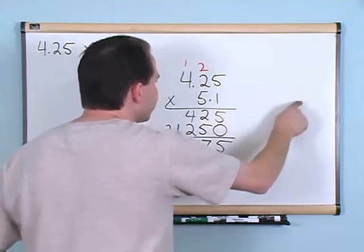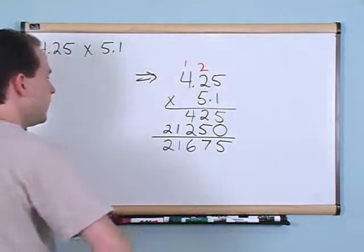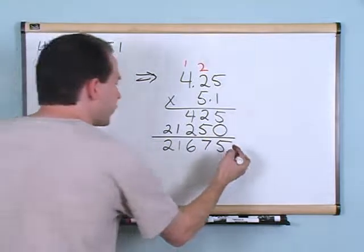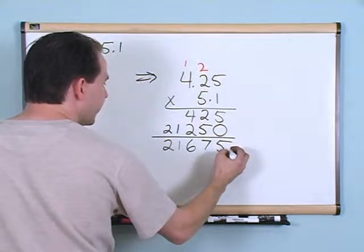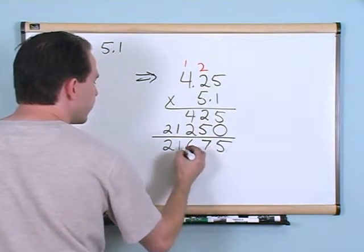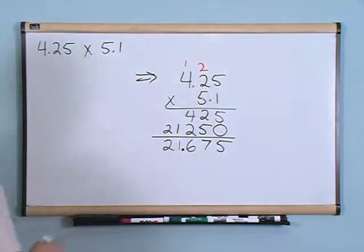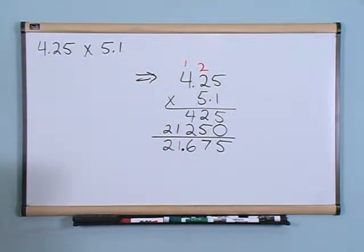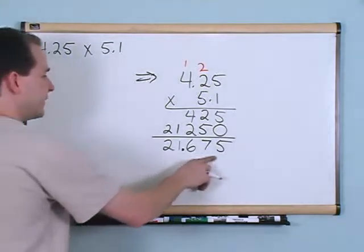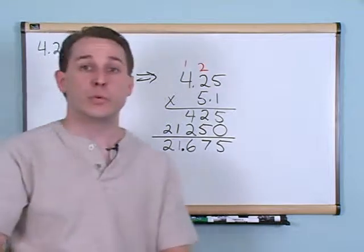Just like before, count how many digits total in your problem are after decimal points: 1, 2, 3 — there are 2 from 4.25 and 1 from 5.1. If there were more digits you'd count those too — but here it's 1, 2, 3 total.